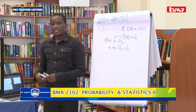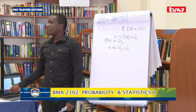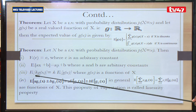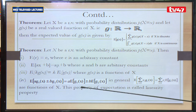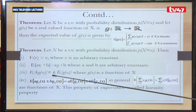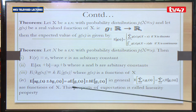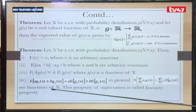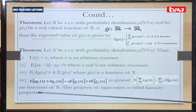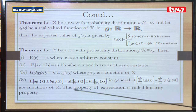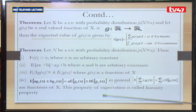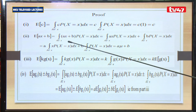Another theorem states that if you have a constant times g(x), then you get the constant times the expected value of g(x). And if you have the expected value of a·g₁(x) + b·g₂(x), where g₁ and g₂ are expressions in x, then it equals a·E[g₁(x)] + b·E[g₂(x)]. These proofs are expressed here.